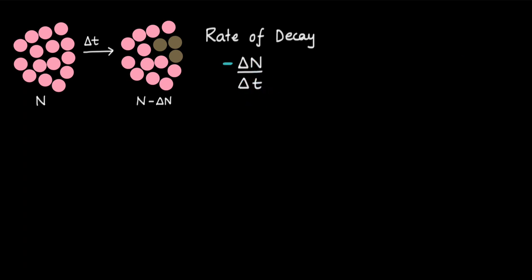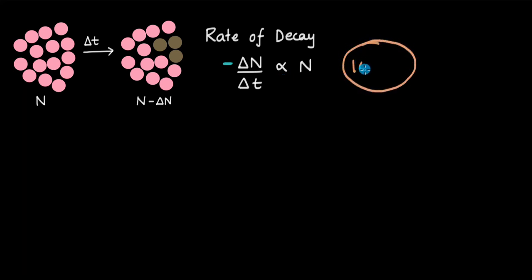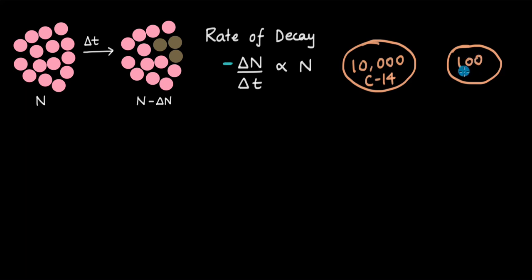It turns out that this rate of decay is directly proportional to the number of radioactive nuclei. To get some intuition, consider a group of 10,000 carbon-14 radioactive atoms and a different group of just 100 carbon-14 radioactive atoms — the same radioactive isotope, but with different N: 10,000 in one group and 100 in the other.